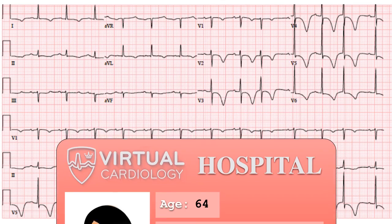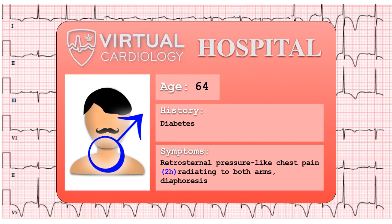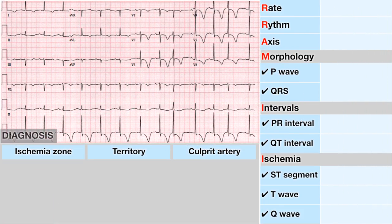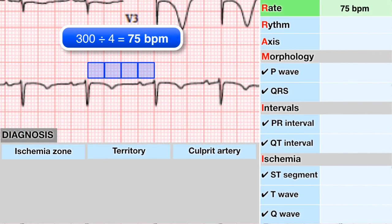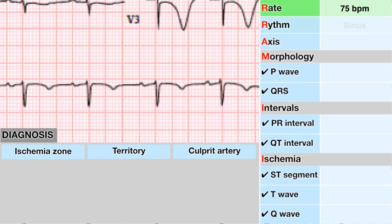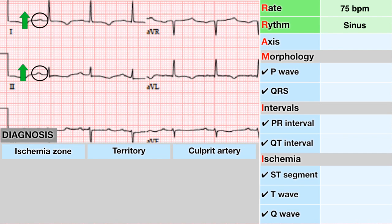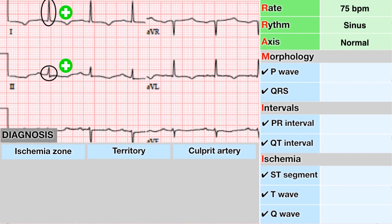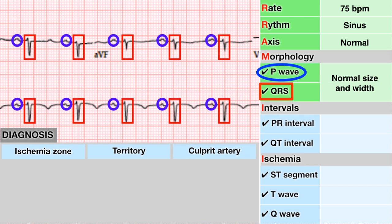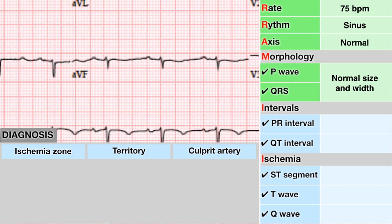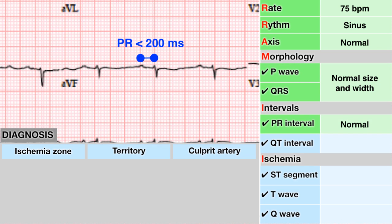Here is an EKG of a 64-year-old diabetic man who presented to the ER with 2 hours of retrosternal pressure-like chest pain radiating to both arms and diaphoresis. The heart rate is about 75 beats per minute. The rhythm is sinus as the P wave is upright in leads 1 and 2 and negative in AVR. The axis is normal as it is positive in leads 1 and 2. The P wave and QRS complex are of normal size and width, and the PR interval is normal.